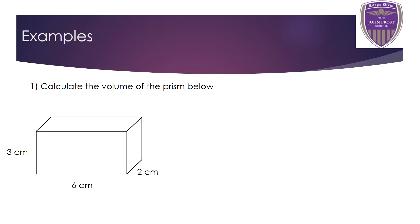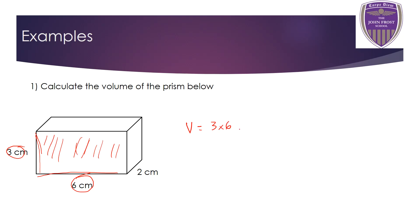For the first example, a cuboid, the cross-section area is width times length: 3 multiplied by 6. Then we multiply by the length of the shape, which is 2. So the volume V = 3 × 6 × 2. 3 times 6 is 18, and 18 times 2 is 36. All measurements are in centimeters, so the volume is 36 centimeters cubed.